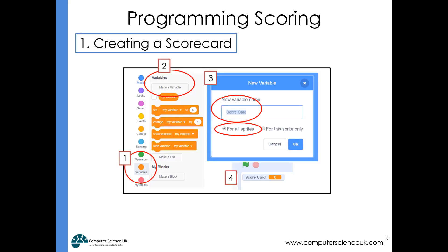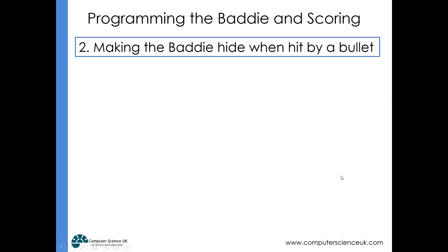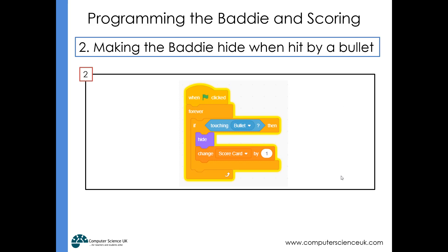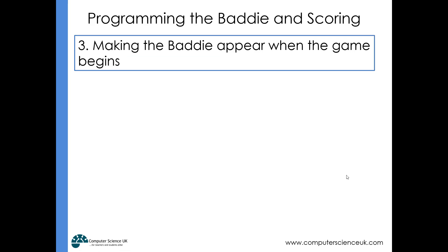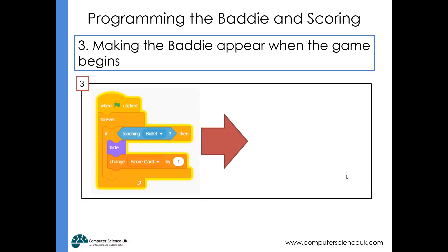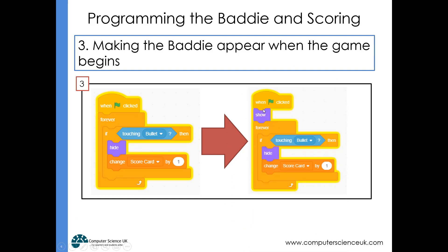To create a scorecard, go to Variables, make a variable, name it 'score', make sure it's for all sprites, and click OK. The scorecard appears at the top of the stage. To make the baddie hide when hit by a bullet, program the baddie with: forever, if touching bullet, hide, change score by one. Add a show block just before the forever loop after green flag clicked to ensure the baddie reappears at game start.